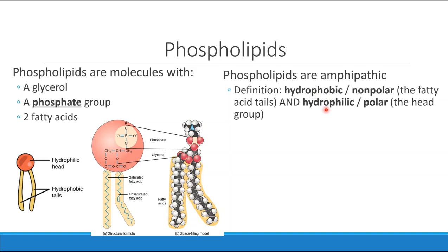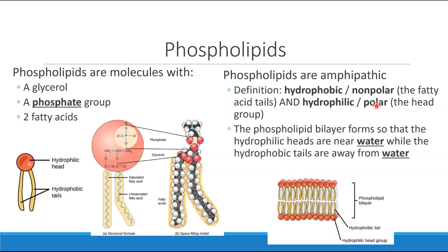The other words that mean the exact same thing are nonpolar — I don't play nice with water — and polar — I do play nice with water. So by having this different chemistry in the two parts, we have a molecule that we call amphipathic. The reason that is significant — why we care about the fact that phospholipids are amphipathic — is because this is how we get the phospholipid bilayer. We have heads and we have tails. The tails don't like water, so they squeeze away from water. The heads do like water, so they're touching water. So the fact that phospholipids are amphipathic is what determines the structure of the phospholipid bilayer.